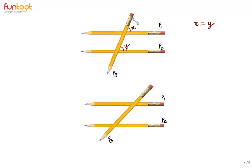So you can see we have rotated the pencil P3, which is the transversal here, in this direction so that this pencil makes a different angle with the parallel pencils P1 and P2.